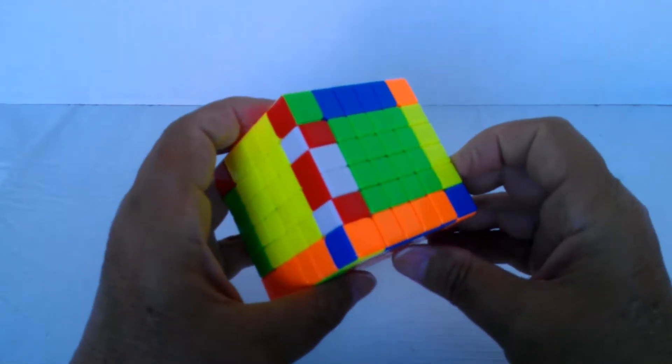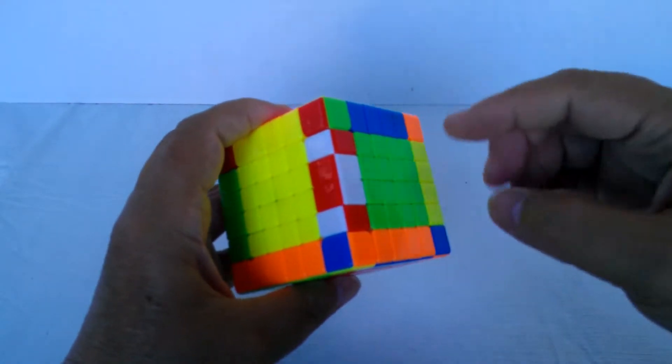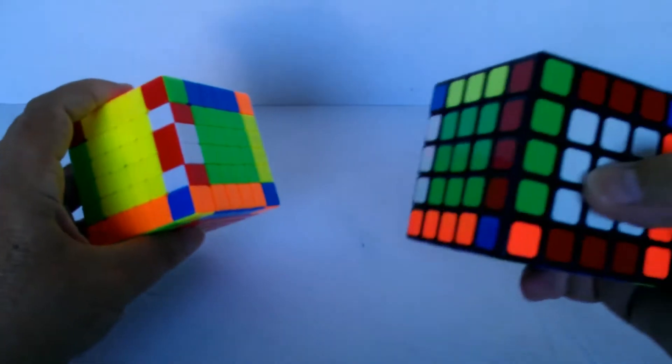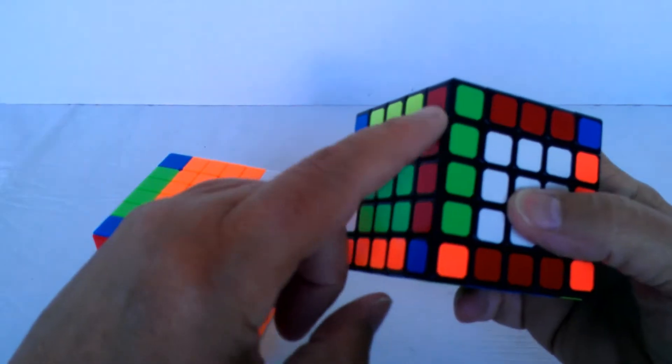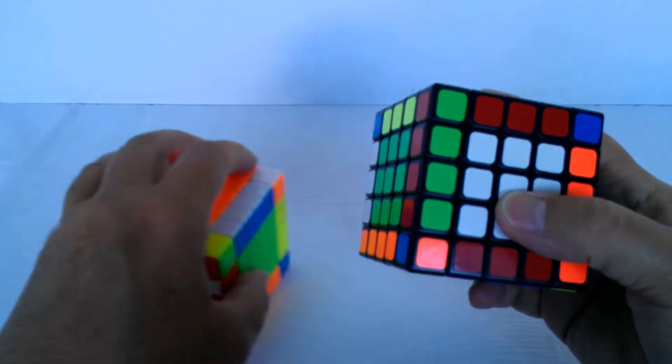On the 5x5, what a case can look like is, since there are three pieces that make up an edge, you can have the center out of whack.